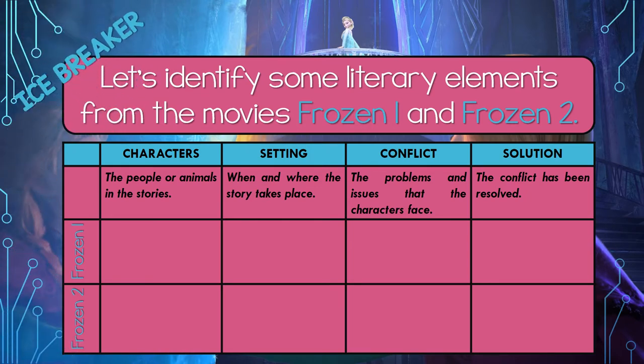I always like to start my lessons with a bit of an icebreaker. Today, let's identify some literary elements from the movies Frozen 1 and Frozen 2. Literary elements are character, setting, conflict, and solution. The characters are the people or the animals in the stories. The setting is when and where the story takes place. The conflict is the problem and the issues that the characters face, and the solution is when the conflict has been resolved. Can you identify any of the characters from Frozen 1 and Frozen 2?